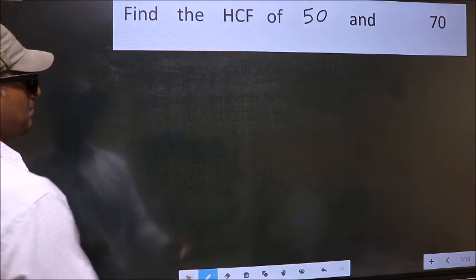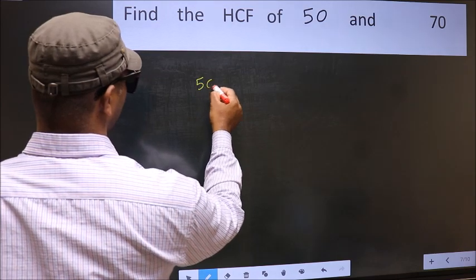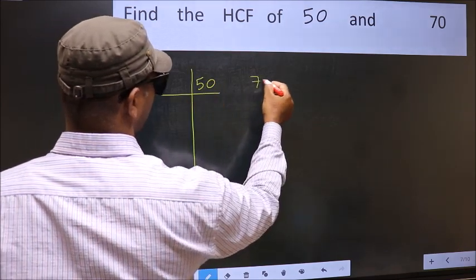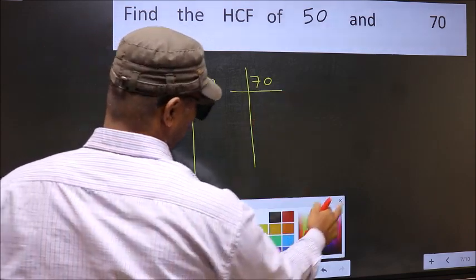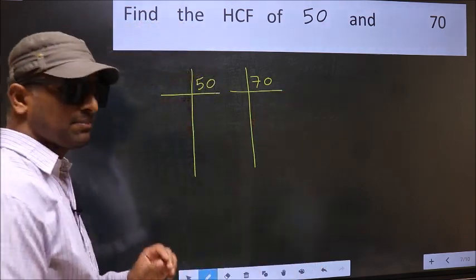What I mean is 50 and 70. This is your step 1.